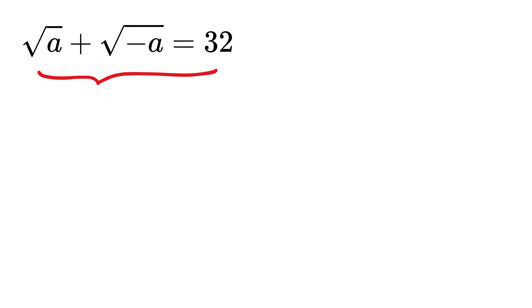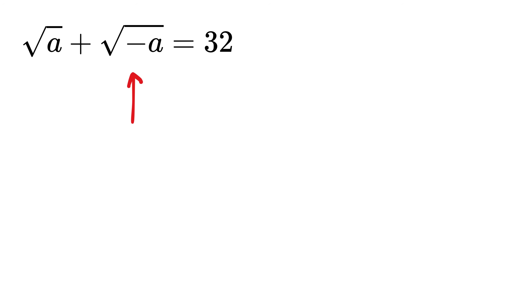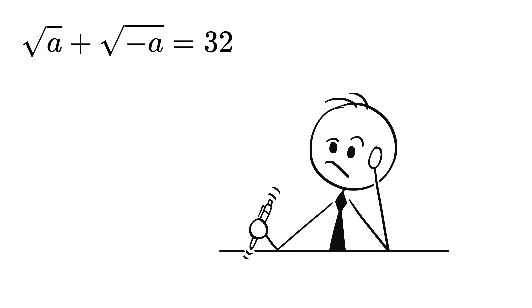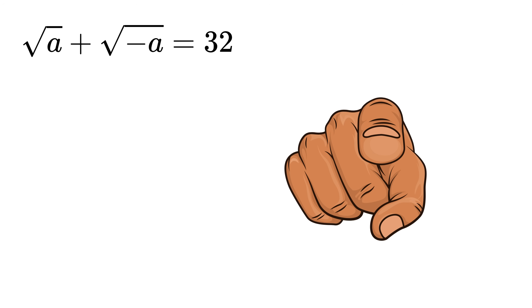We are given a nice math Olympiad problem where the square root of a plus the square root of minus a equals 32. Our job is to find all possible values of a. Can you solve it?